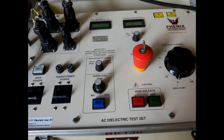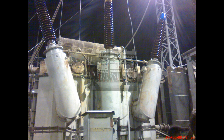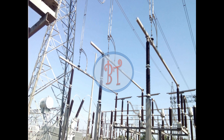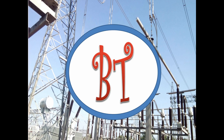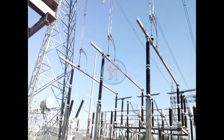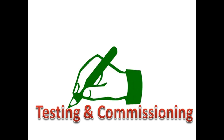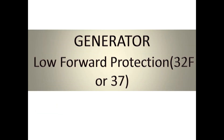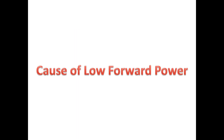Hi, welcome to Bernitech channel. Here we are going to see low forward power production. Its ANSI code is 37. Now we will see the causes of low forward power production.